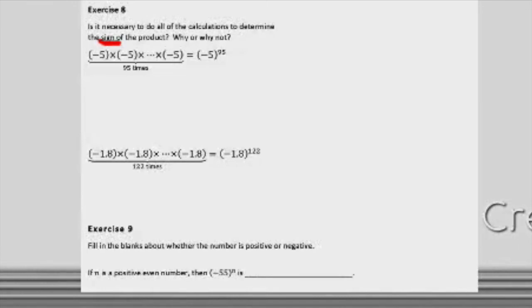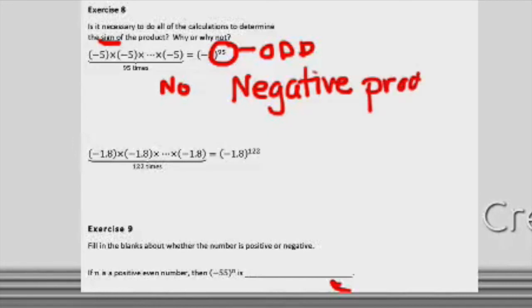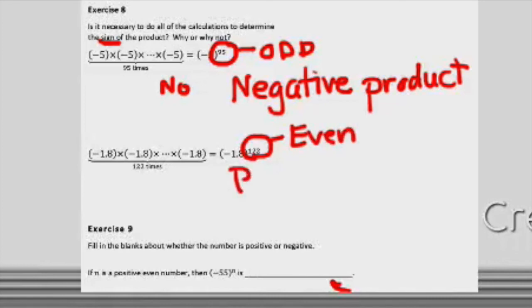In exercise eight, it's asking us: is it necessary to do all the calculations to determine the sign of the product — not the numerical answer, but just the sign? The answer is no, because you just need to decide whether you have an odd or an even number of negatives. So what kind of number is 95? It's odd, so that gives us a negative product. And if we look at the power of 122 — that's even — so that will give us a positive product.